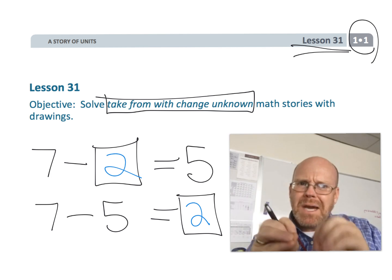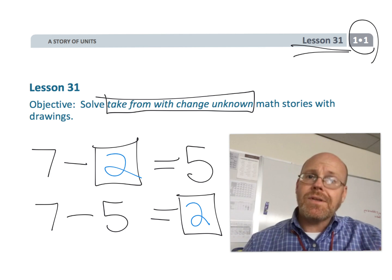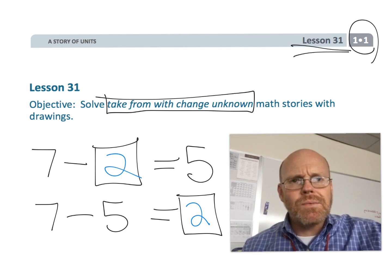Instead of 7 minus blank equals 5, the students are going to be writing down the number sentence 7 minus 5 equals blank. Let's get started and I think you'll understand once we get going.